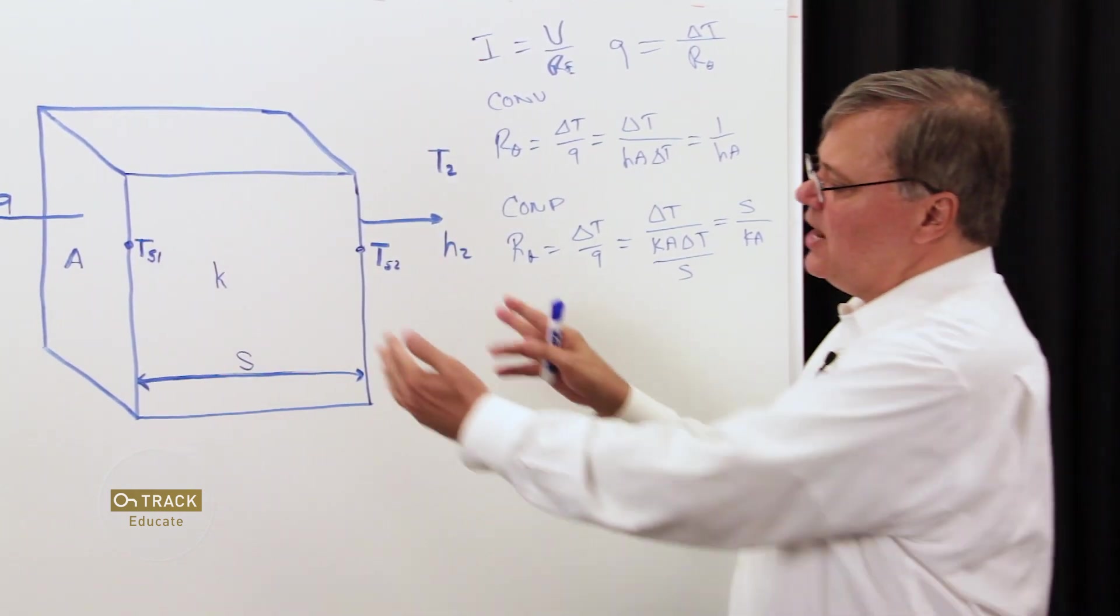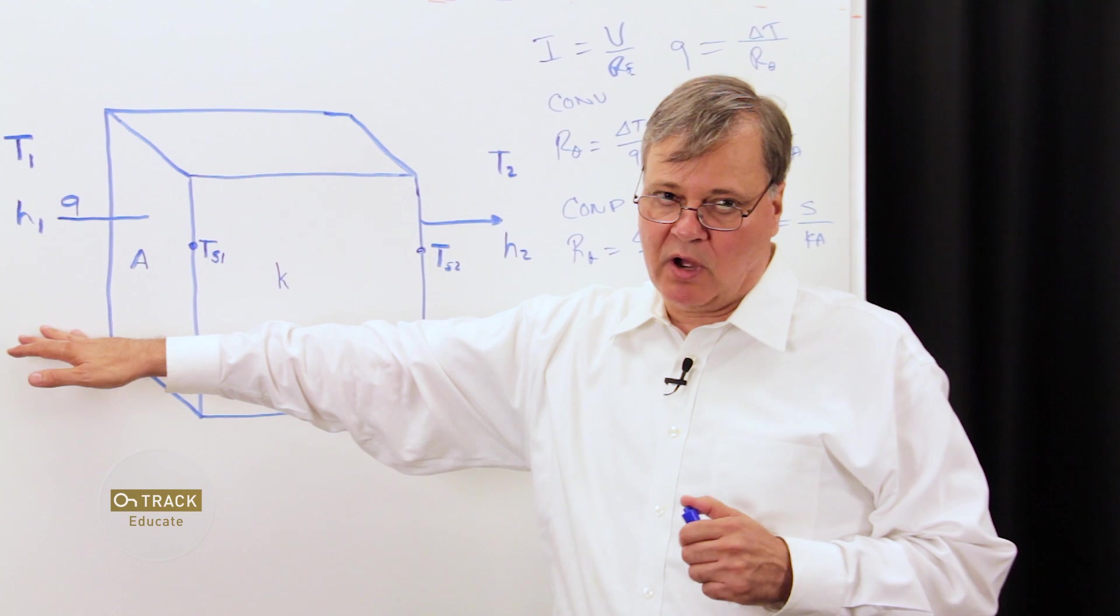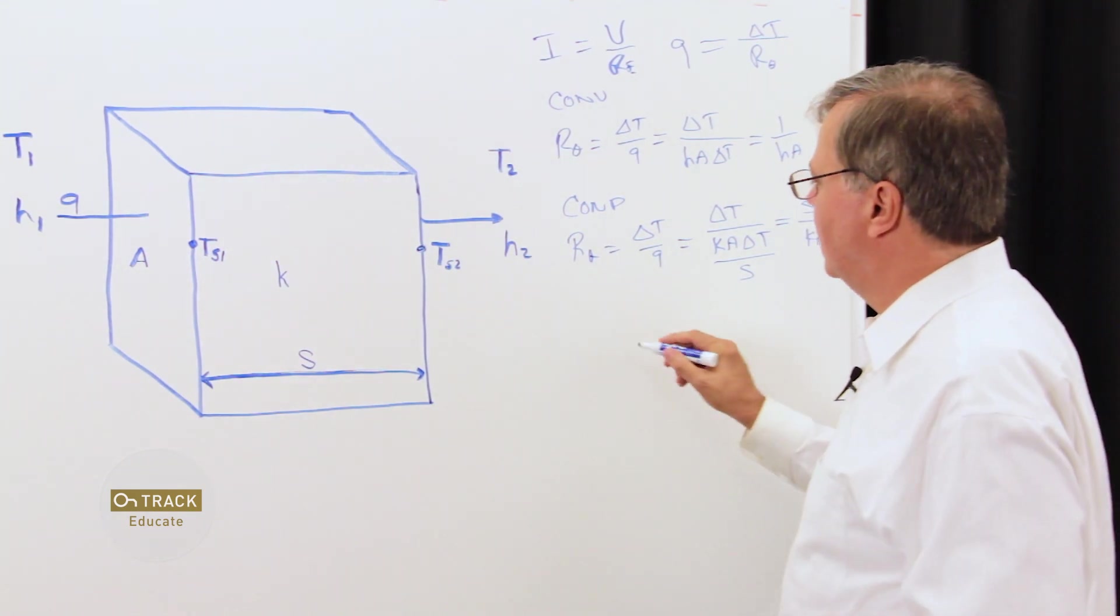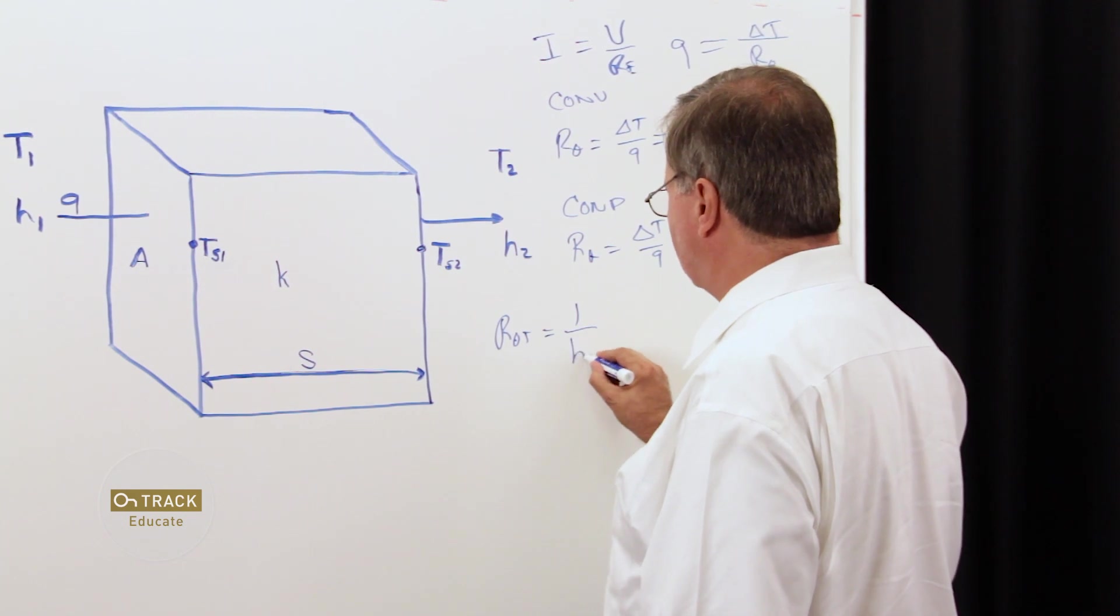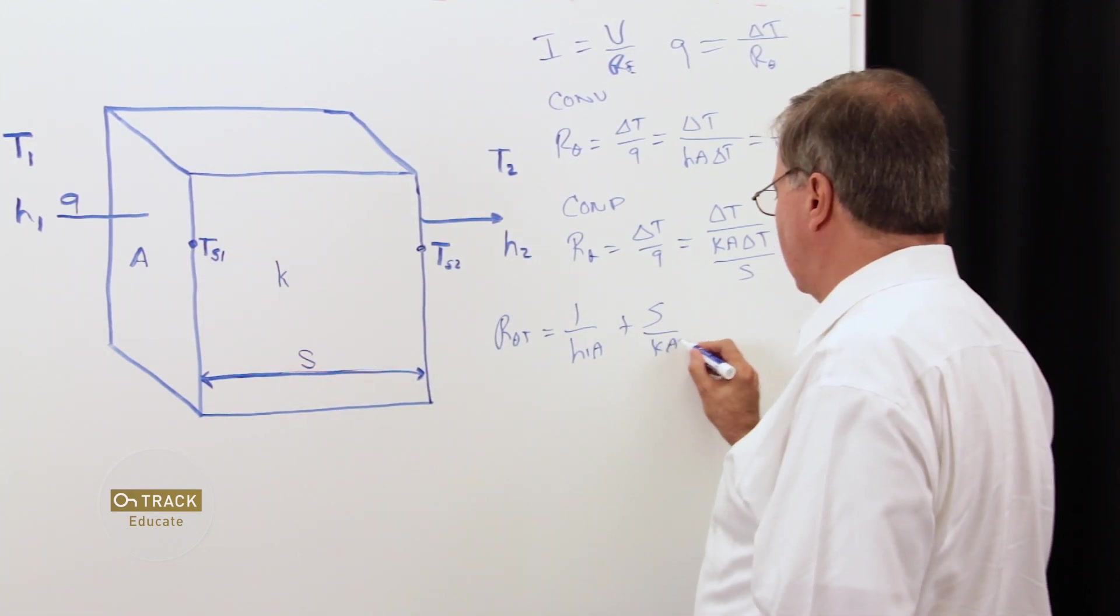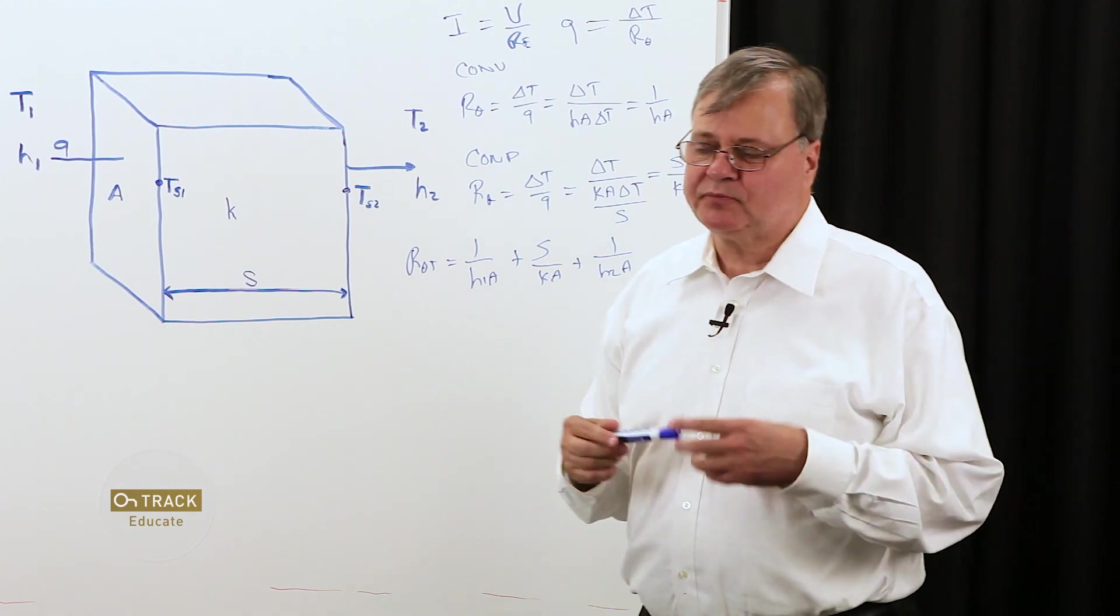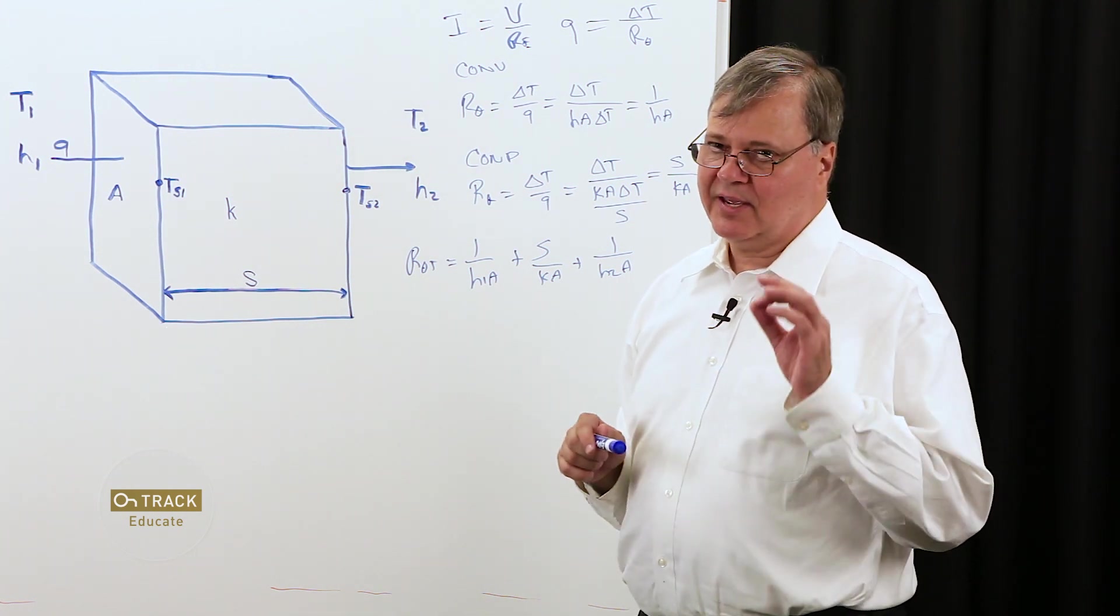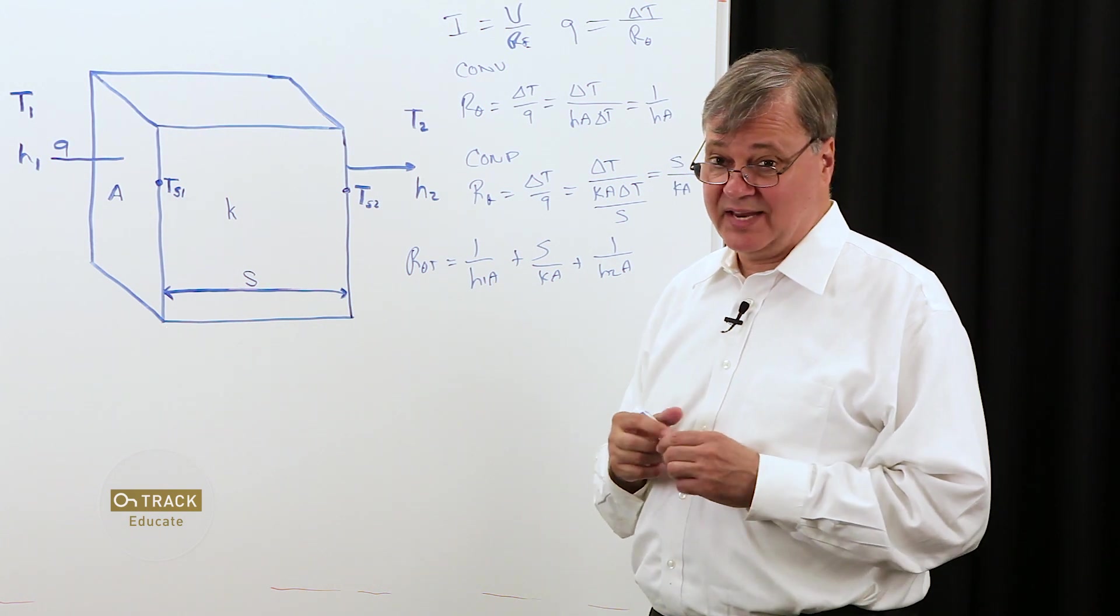So, for our entire system here, we have three thermal resistivities. One for region one, our convection model, our solid conductivity model, and then our second convective model. In this case, R theta total is equal to 1 over H1A plus our distance through our solid material over Ka plus 1 over H2A. Now, the concept of thermal resistance is very nice when we're looking at thermal management of electronic components because the manufacturers make it simple for us. They provide us these thermal resistance numbers in units of degrees C per watt.